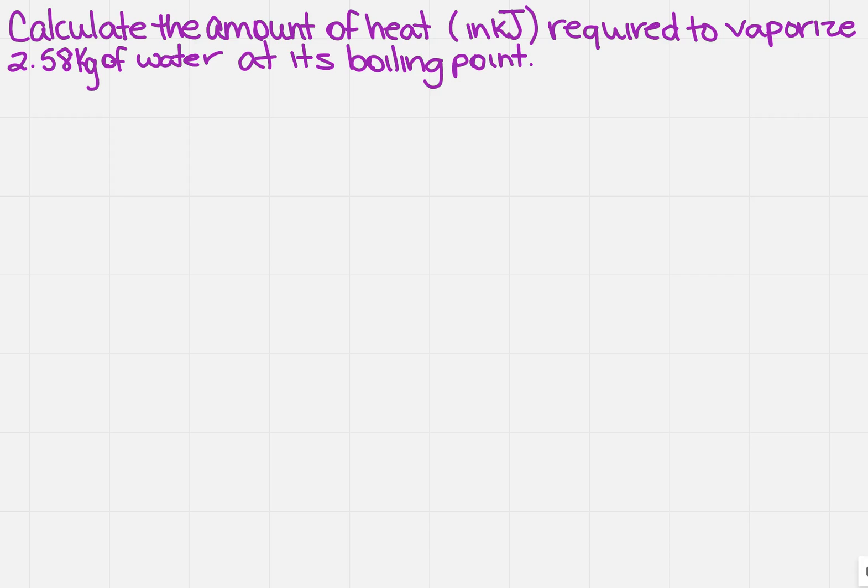I want to calculate the amount of heat in kilojoules required to vaporize 2.58 kilograms of water at its boiling point. Remember that we need to look at what are the key parts of information. It tells me I've got 2.58 kilograms and it's water at its boiling point. So those are the key parts that are going to help me to solve this equation.